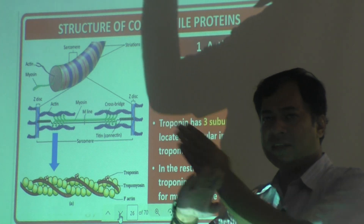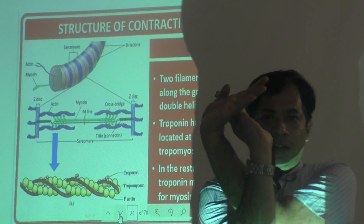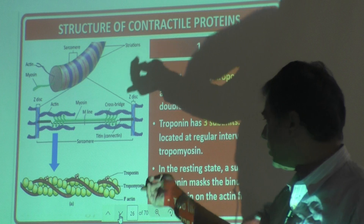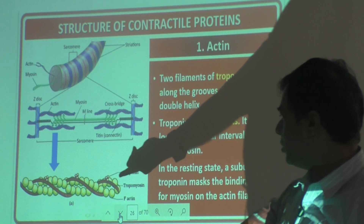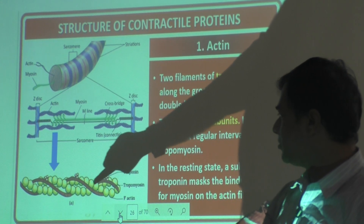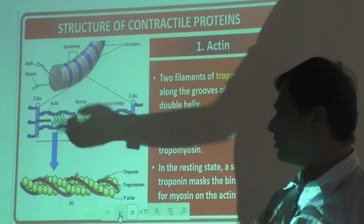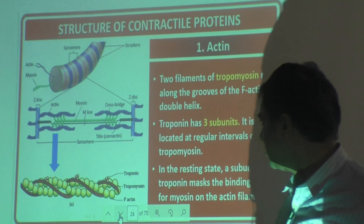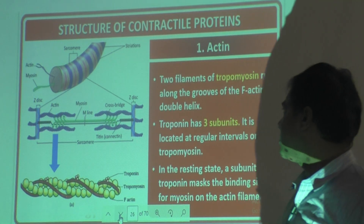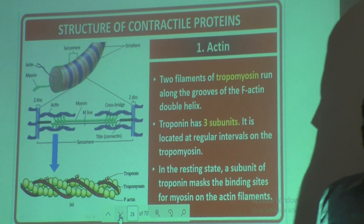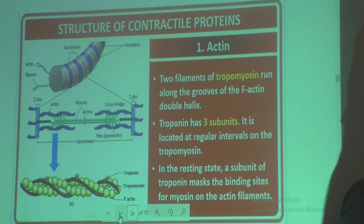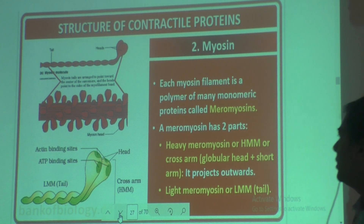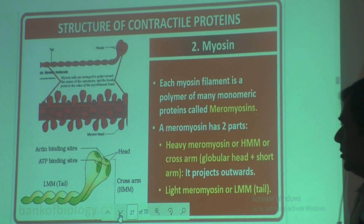Two chains are coiled like this — like a helix, similar to DNA. Two chains of ball-like structure have coiled together, forming a helical structure. That is the structure of actin. Then the second contractile protein is myosin.